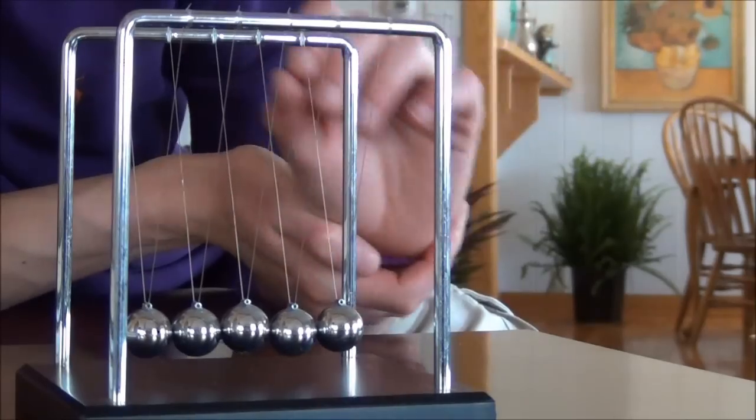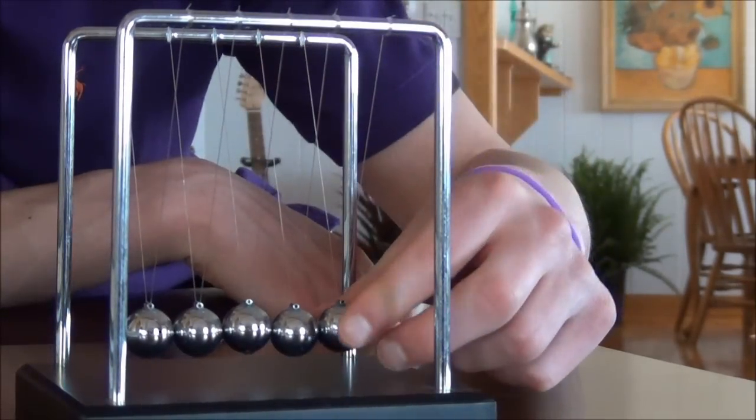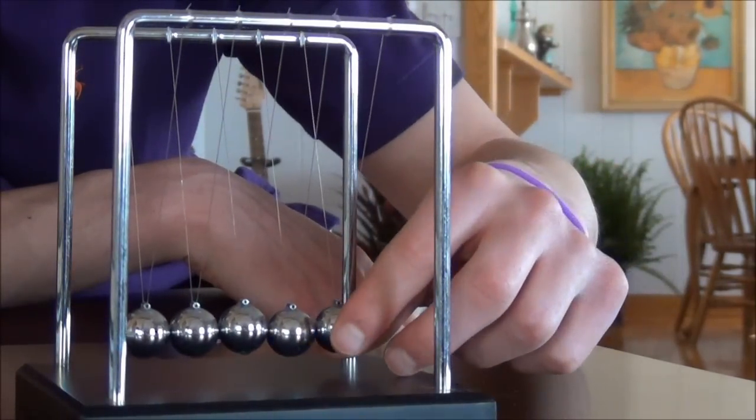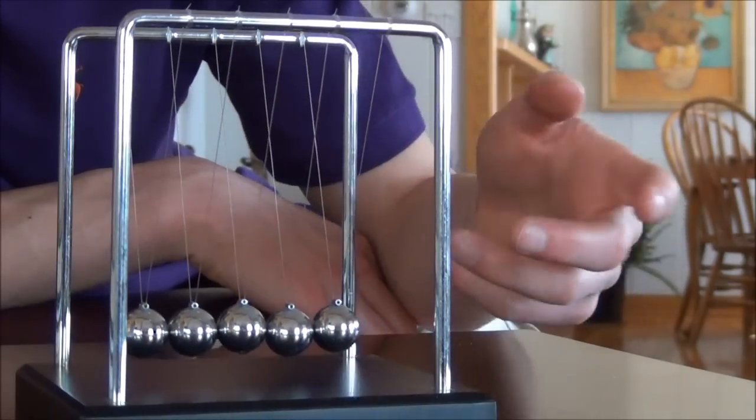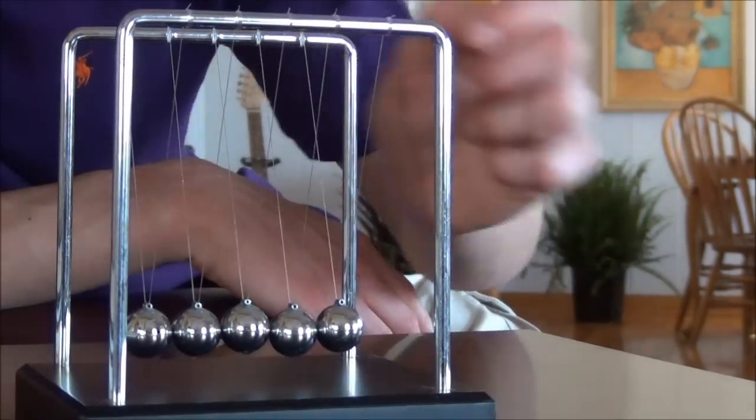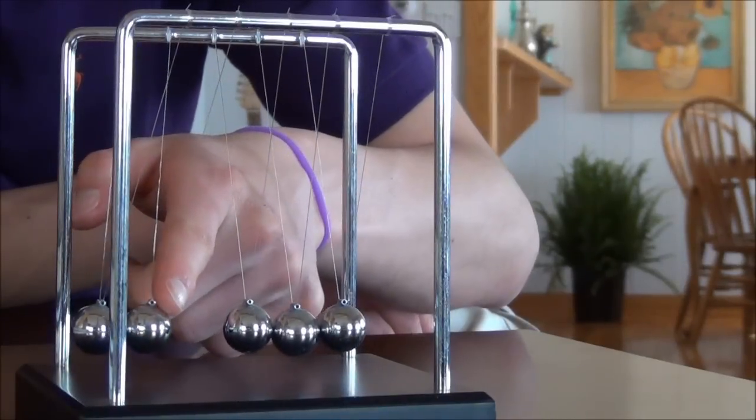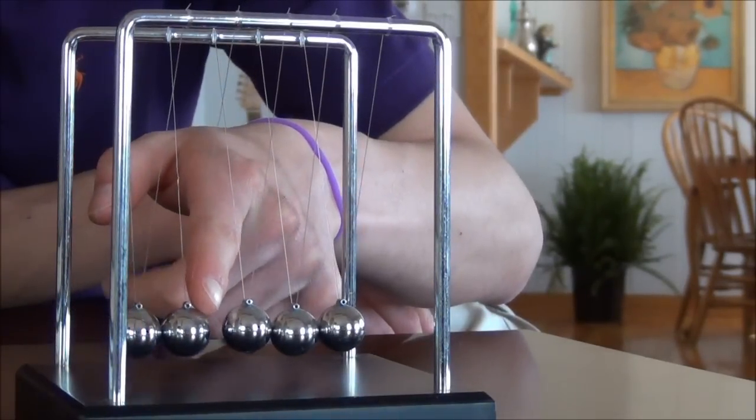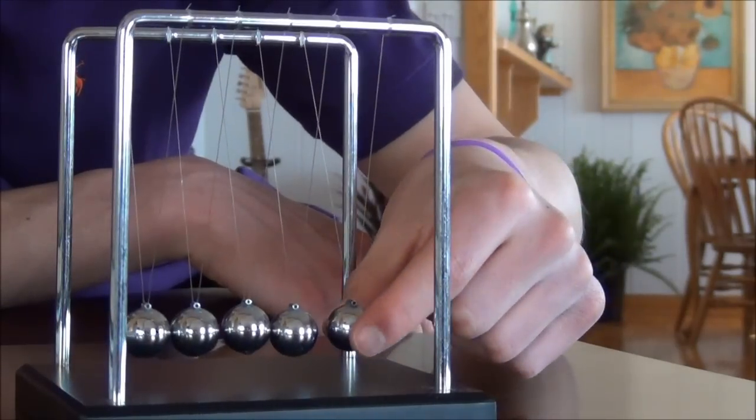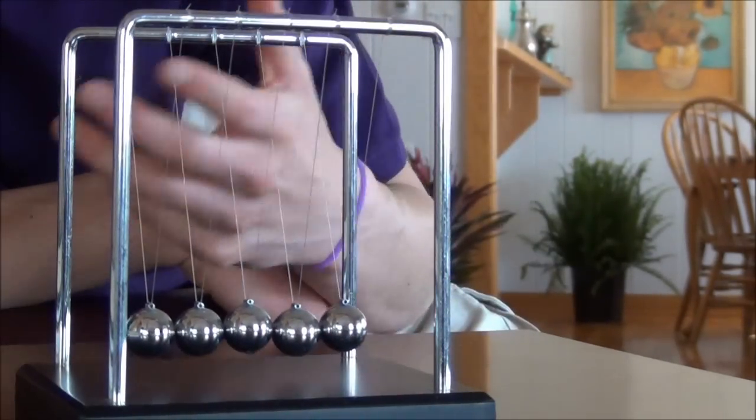But there's more going on here than just conservation of momentum, because if you think about it, if I just have this one ball coming in at a certain speed v, there's no reason that I couldn't have, let's say, two balls then come off from the other end, moving half as fast as this incoming ball. In that case, momentum would still be conserved.